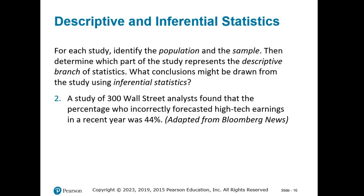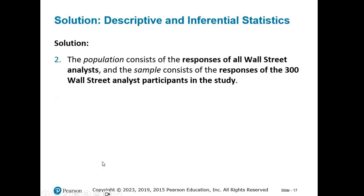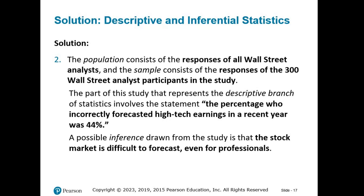Study number two: a study of 300 Wall Street analysts found that the percentage who incorrectly forecasted high-tech earnings in a recent year was 44%. The population consists of the responses of all Wall Street analysts, and the sample consists of the responses of the 300 Wall Street analyst participants in the study. The part of this study representing the descriptive branch of statistics is the statement that 44% incorrectly forecasted high-tech earnings. A possible inference drawn from the study is that the stock market is difficult to forecast, even for professionals.